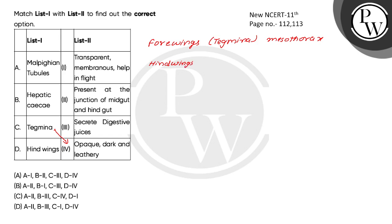Now, hind wings — hind wings are transparent and membranous, and they are used in flight. So the correct match for hind wings is: transparent, membranous, and help in flight.